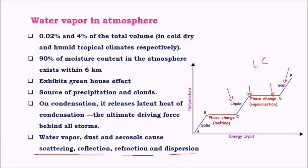Aerosols adsorb water vapour, hence aerosols help in the condensation of water vapour. When the size of water droplets becomes considerably large, it allows phenomena like scattering, reflection, refraction, and dispersion. Various phenomena like the red colour of the sun at dawn and dusk, the blue colour of the sky, the blue colour of the ocean, and rainbows are all mainly because of water vapour and other atmospheric effects. We will study these in detail later.